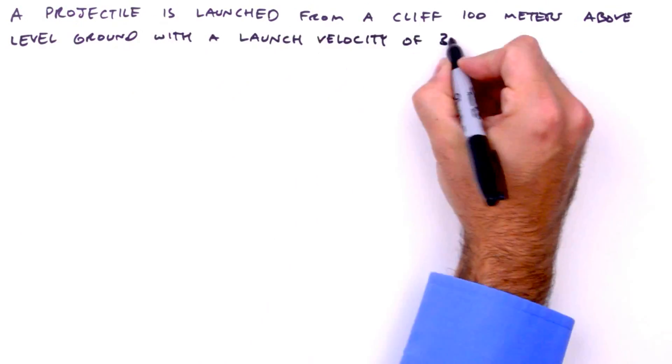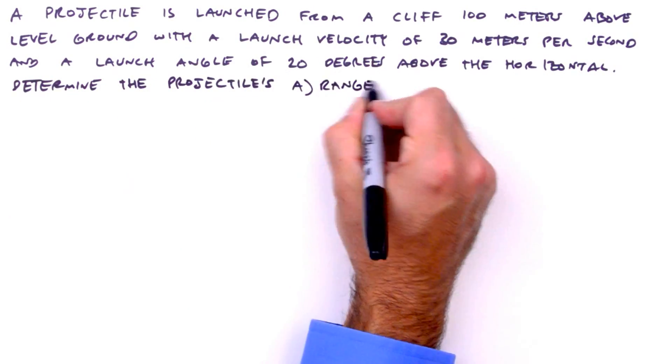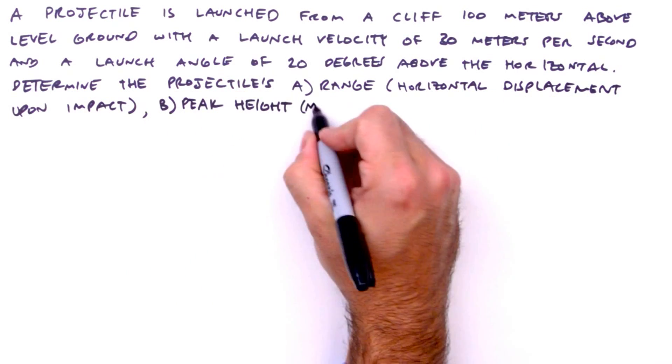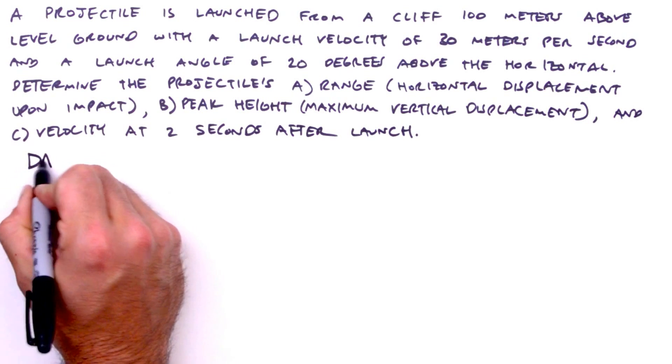For this problem, we're given the initial position and velocity of the projectile, and our task is to determine the projectile's range, peak height, and velocity at some point in time along its trajectory. The first step, as always, is to draw a picture.